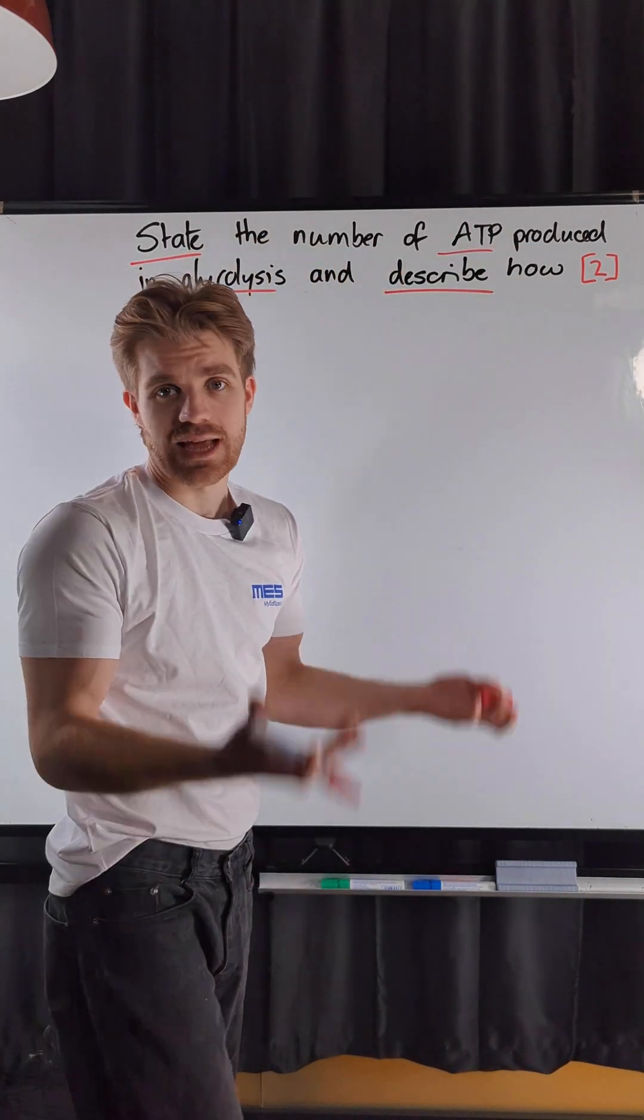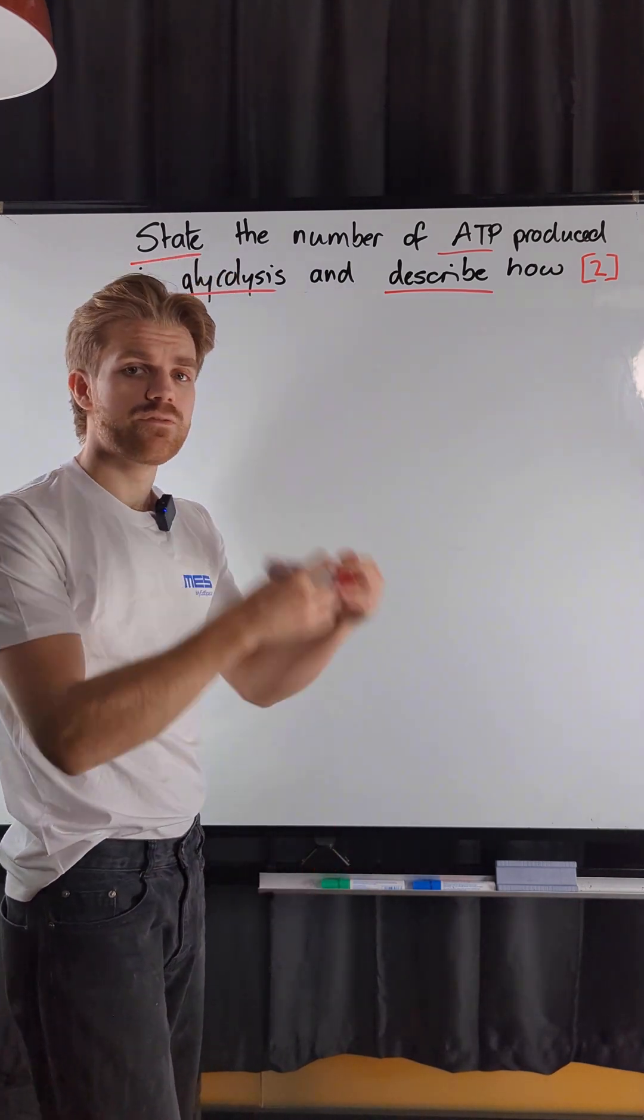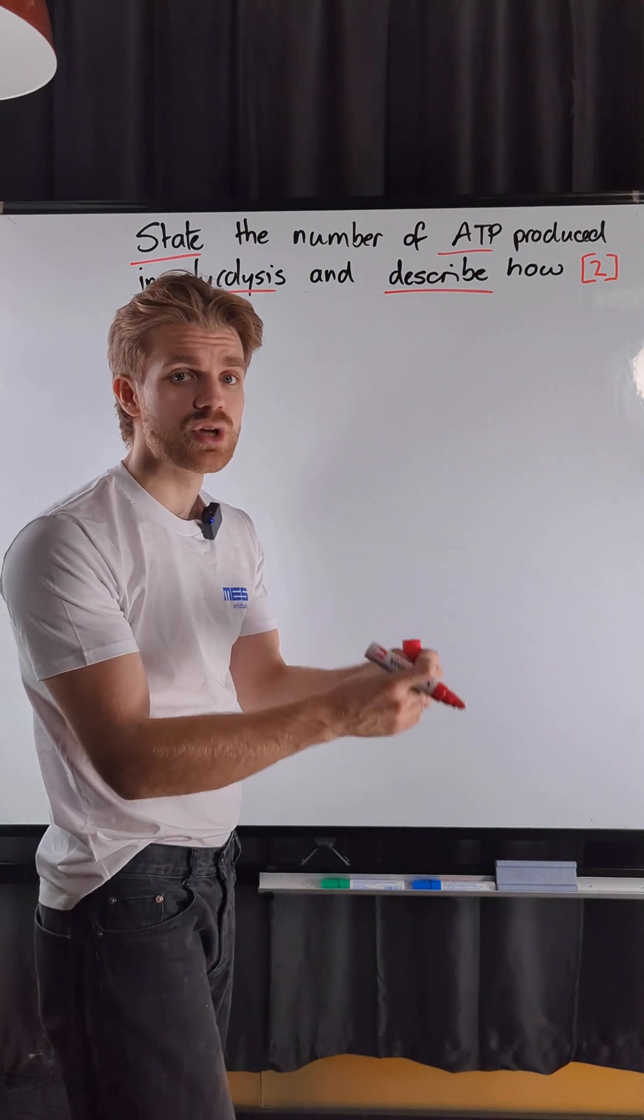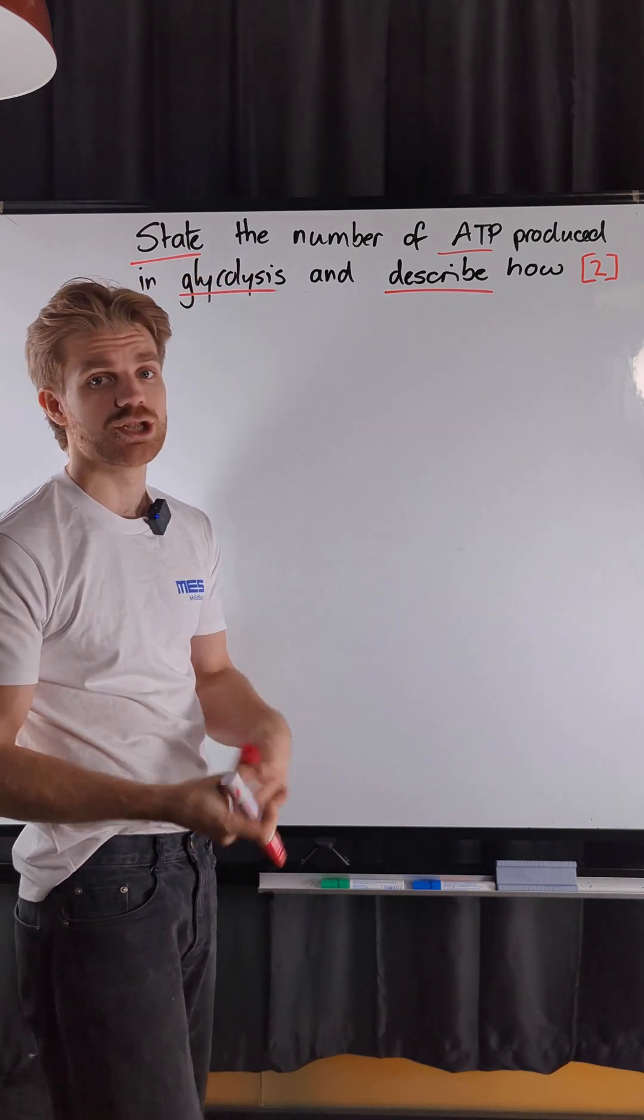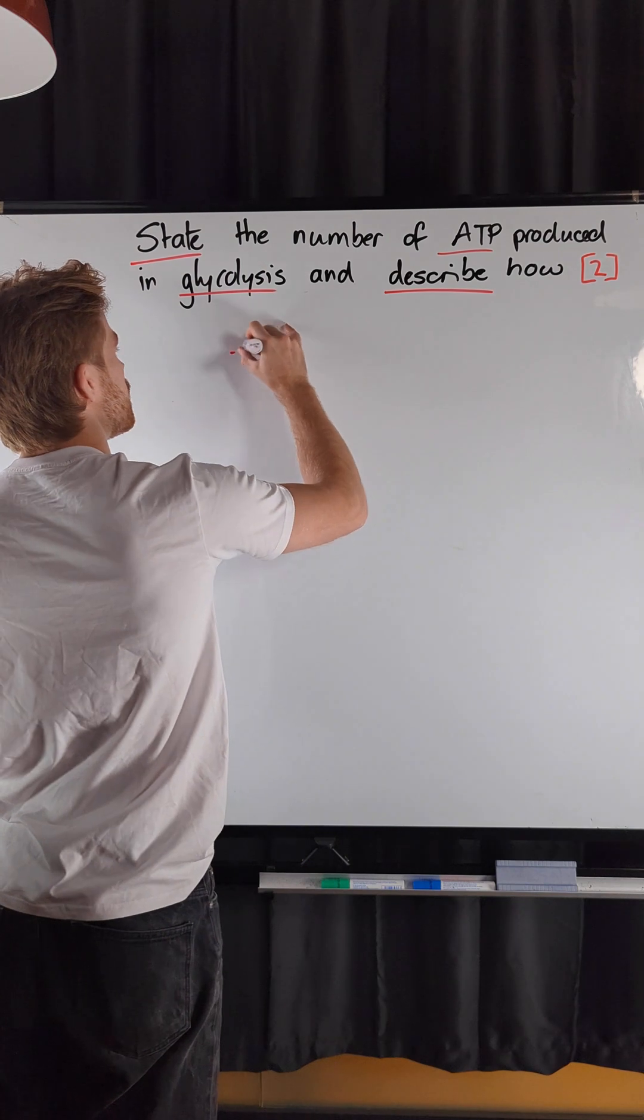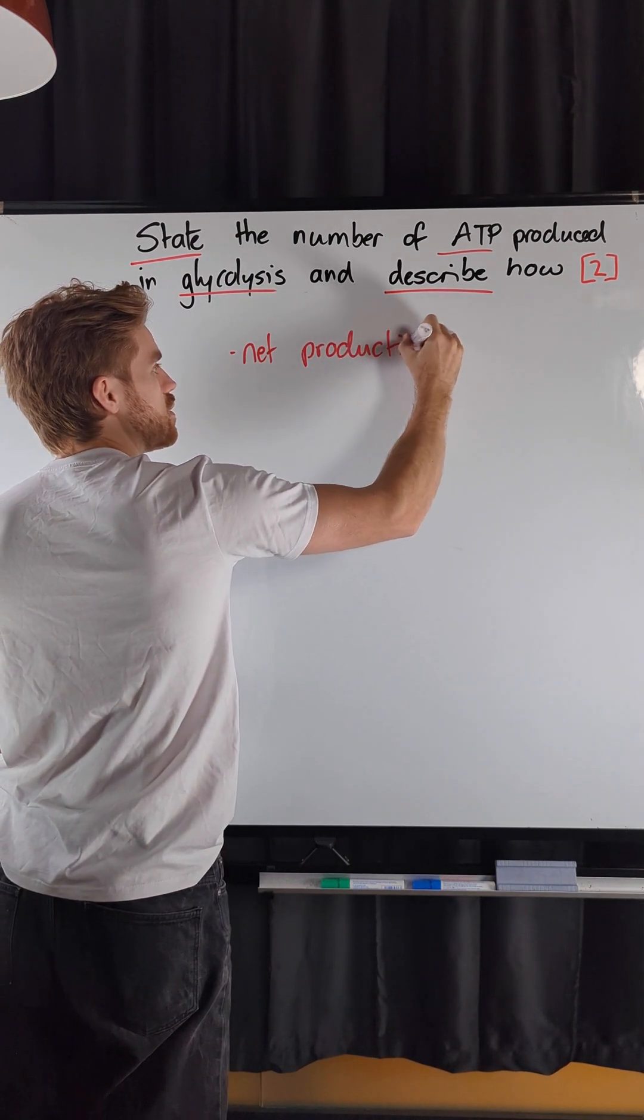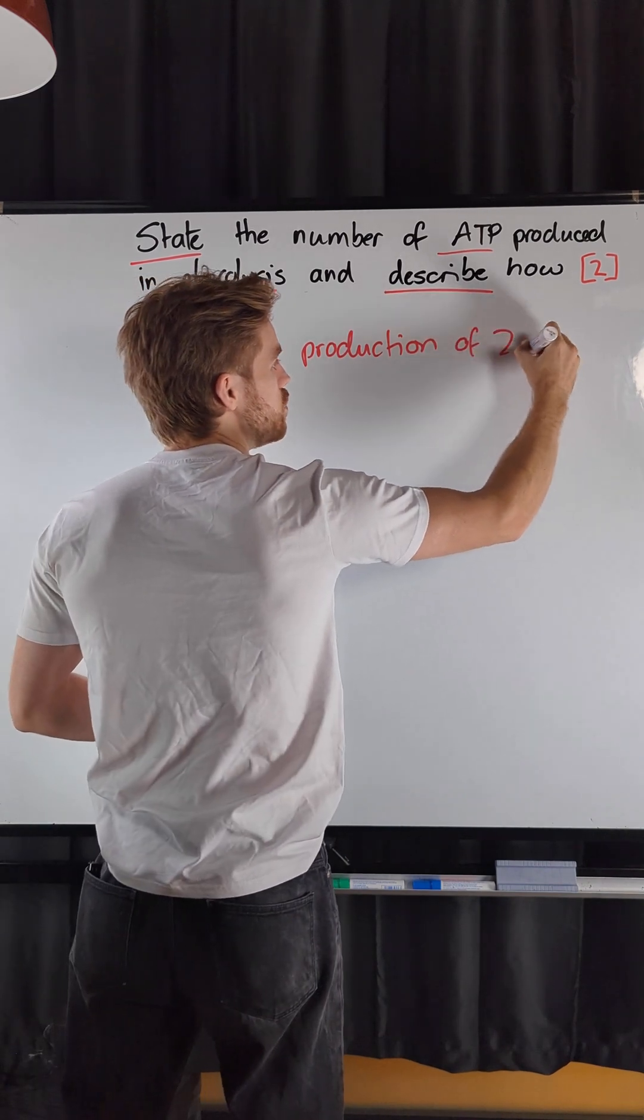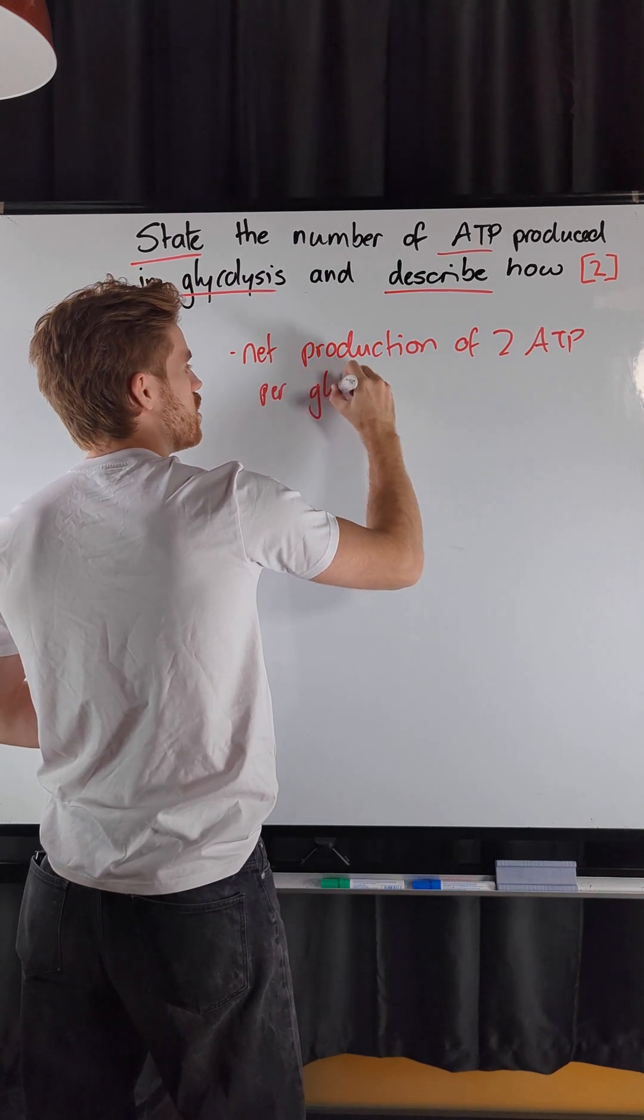So let's do the first thing. How many ATP are produced in glycolysis? Well we know that there are four ATP that are being produced, but two are required at the start of glycolysis. So we get a net production of two ATP per glucose.